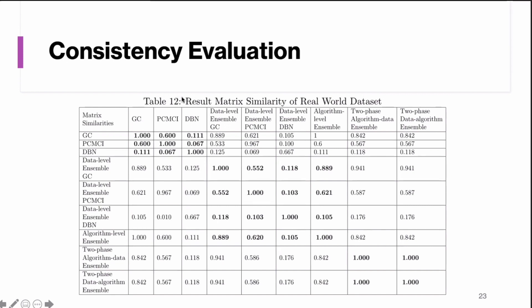For consistency evaluation, we show the result matrix similarity on the real-world dataset. The three individual methods have very large differences between them, and even single-level ensembles are only slightly better. But using our two-phase ensemble, the consistency is perfect — they output consistent results whether using algorithm-data or data-algorithm ensemble.